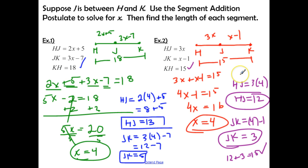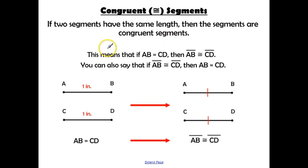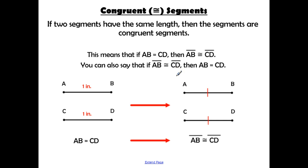If you didn't get that correct, pause and check your work to see where you made a mistake. Congruent segments — this is the congruent symbol: an equal sign with a squiggly above it. If two segments have the same length, they are congruent. If the length of AB equals the length of CD, then segment AB is congruent to segment CD, and vice versa.